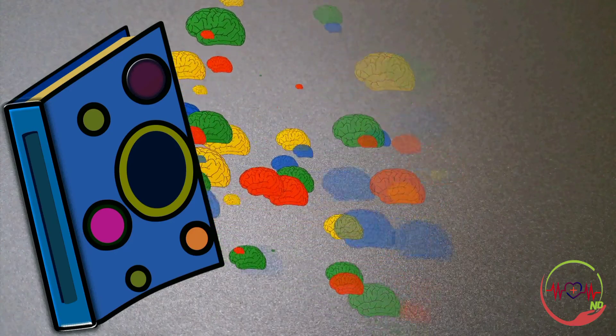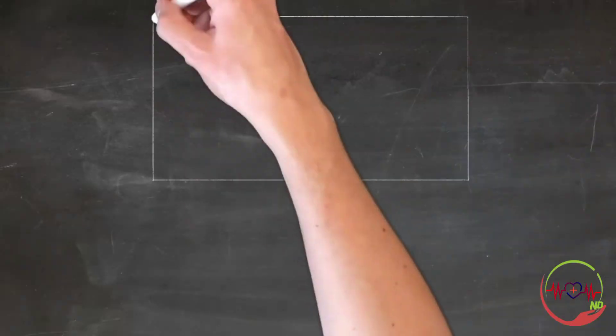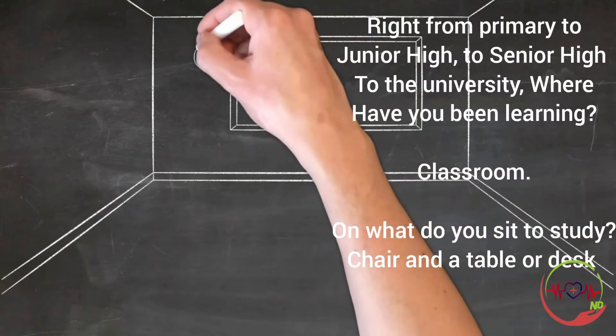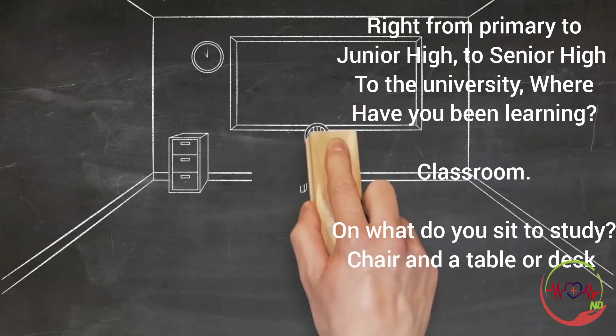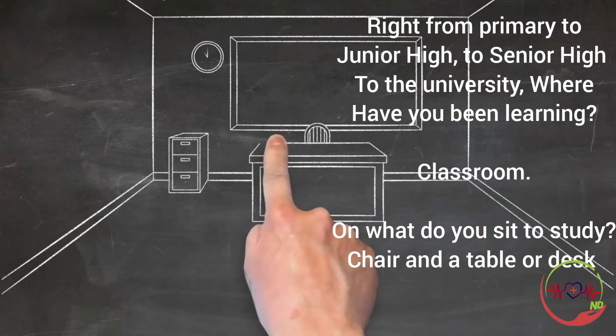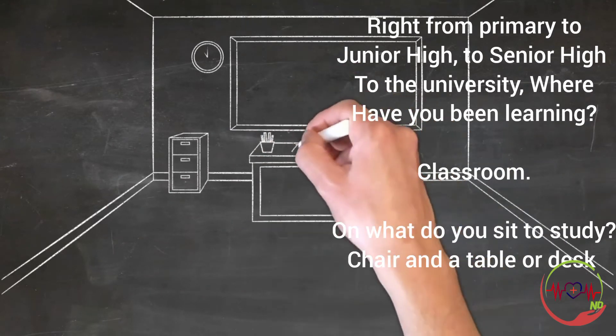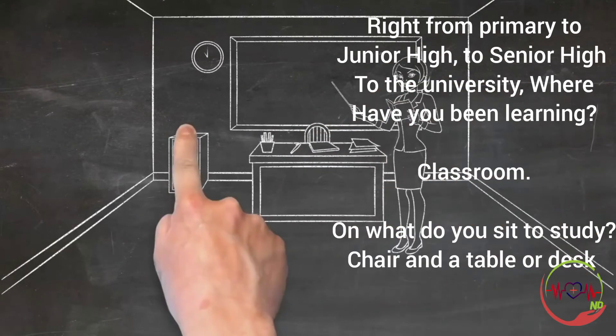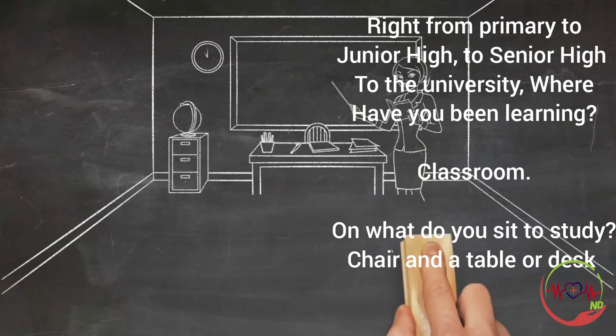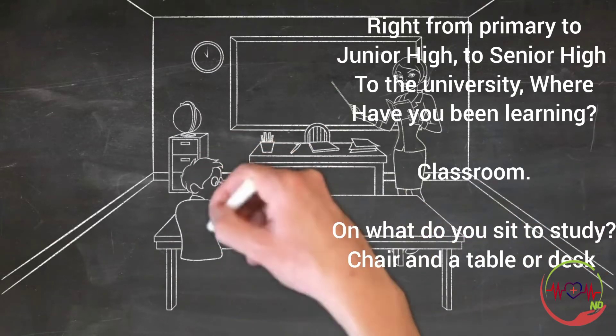Back in the days in primary school, secondary, junior high, university, we've been learning in the classroom and we sit on a chair at the table to study. So this has subconsciously or consciously infringed on our minds and our memory that if we want to actually do serious studying, we have to sit in that posture.